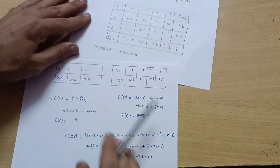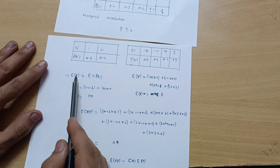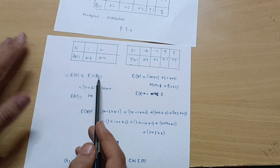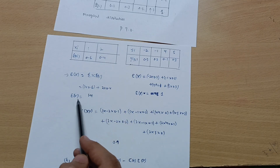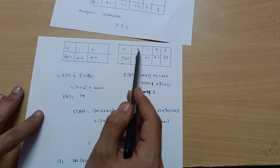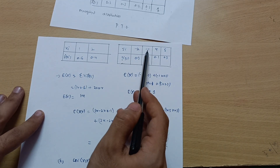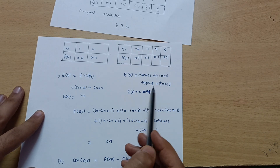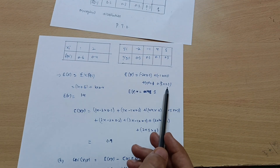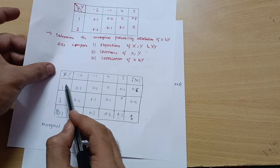For the first part, we calculate E[X] and E[Y]. E[X] equals the summation of x_i times f(x_i), so 1 times 0.6 plus 2 times 0.4, giving E[X] equal to 1.4. Then E[Y] equals minus 2 times 0.3, plus minus 1 times 0.3, plus 4 times 0.1, plus 5 times 0.3, giving E[Y] equal to 1.